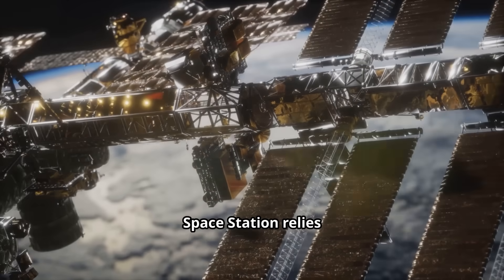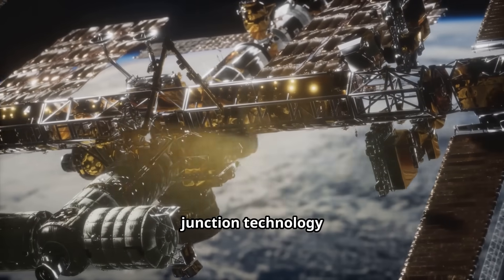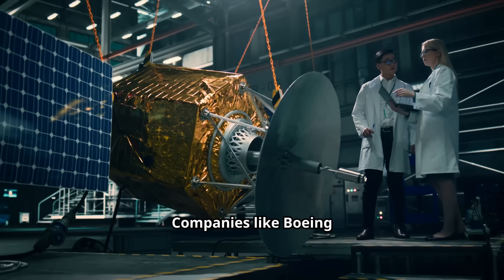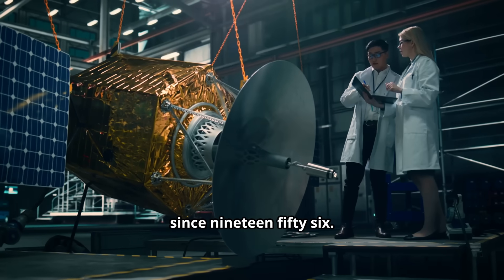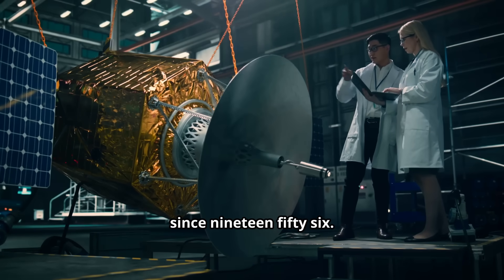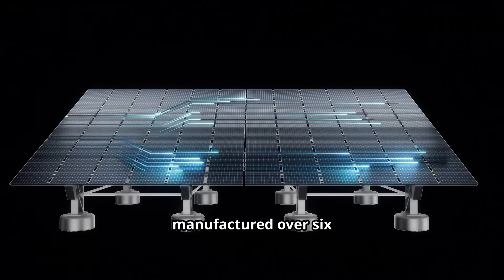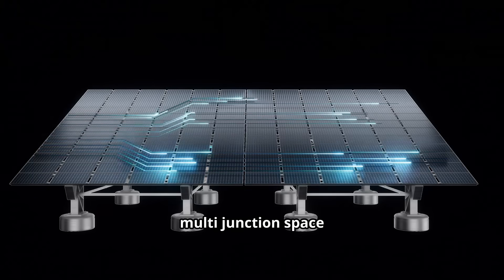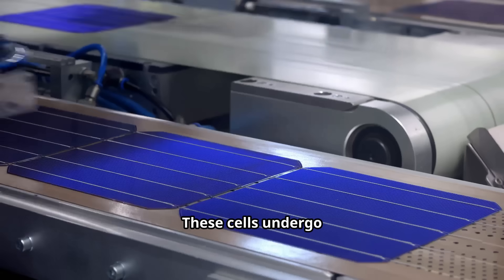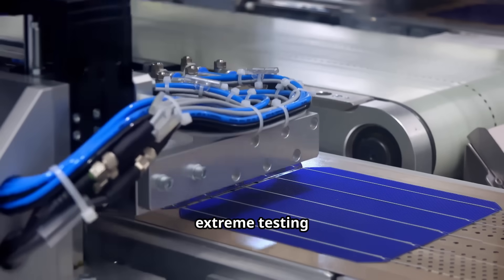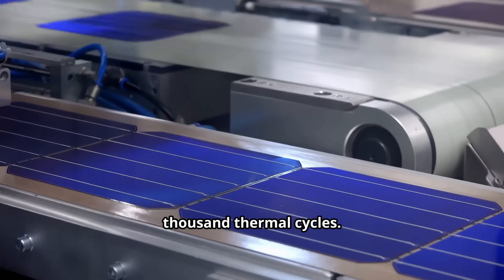The International Space Station relies on similar multi-junction technology for power generation. Companies like Boeing Spectrolab have been leading this technology development since 1956. They have manufactured over 6.5 million multi-junction space solar cells throughout their history. These cells undergo extreme testing including 100,000 thermal cycles.